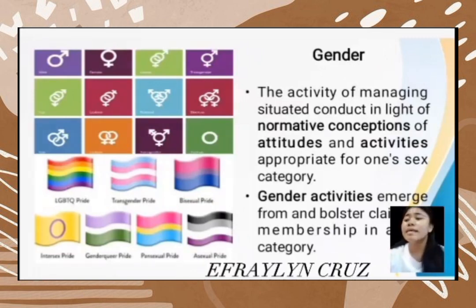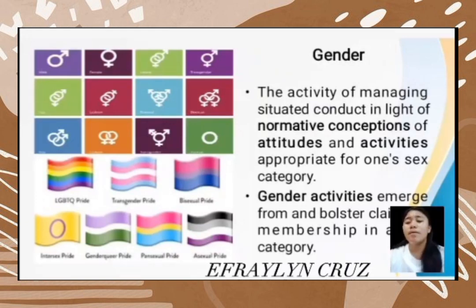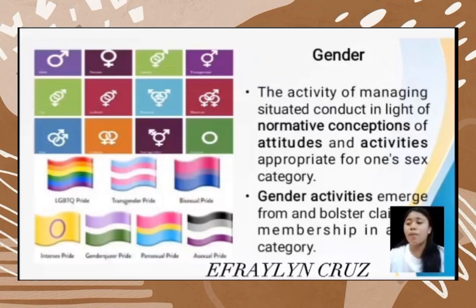The asexual pride flag consists of four horizontal stripes: black, gray, white, and purple from top to bottom. The black stripe represents asexuality, the gray stripe represents the gray area between sexual and asexual, the white stripe represents sexuality, and the purple stripe represents community.